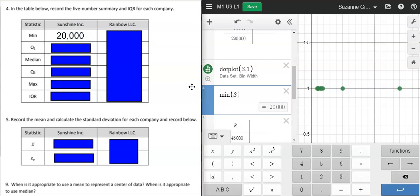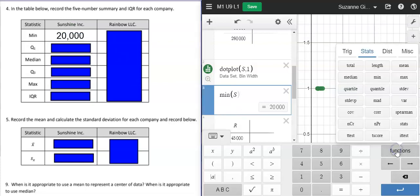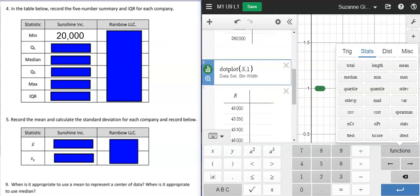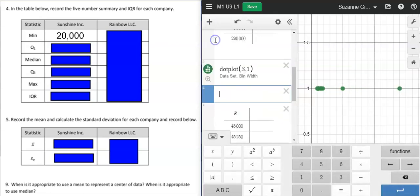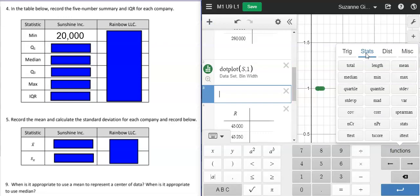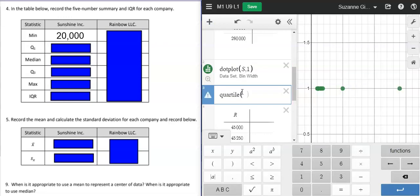If I wanted to do Q1, which is quartile one, I could go to delete this out, start a new one. Functions, stats, quartile. I want to use the data set that I labeled S and I want the first quartile. So that's what that S and that one represents.